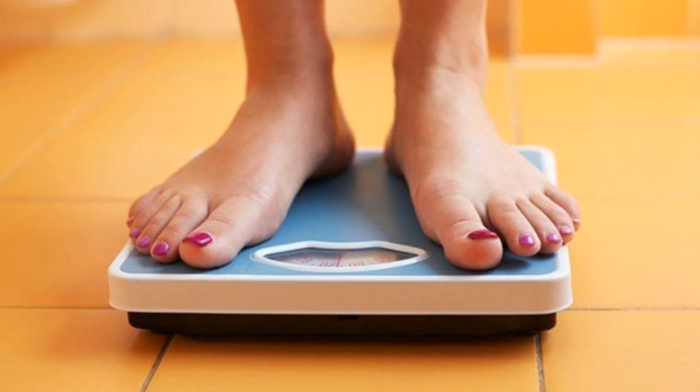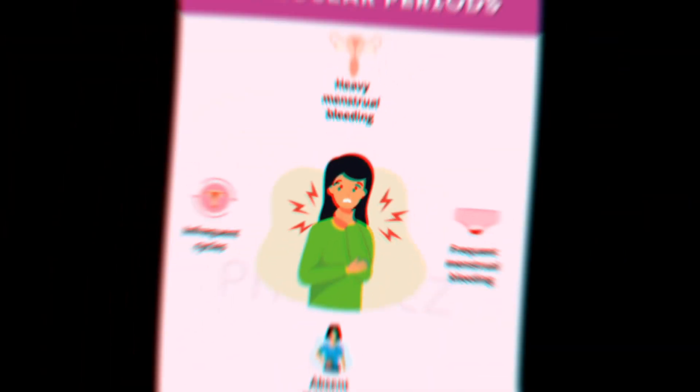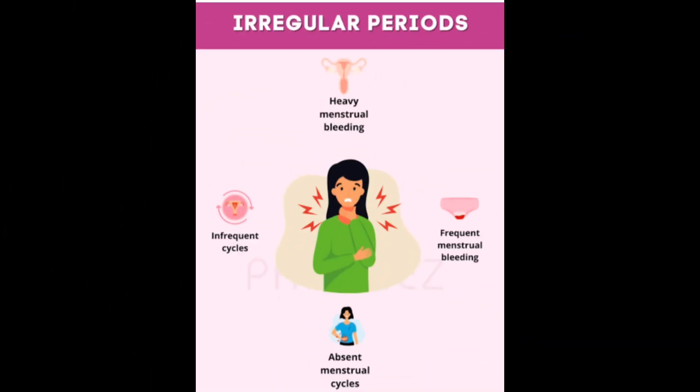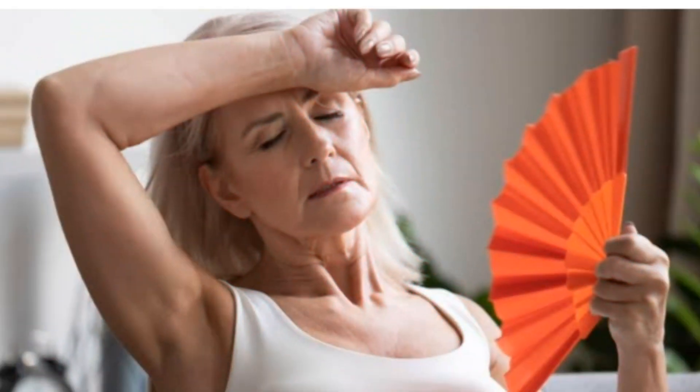Symptoms of overactive thyroid (hyperthyroidism) include anxiety, irritability, nervousness, trouble sleeping, weight loss, an enlarged thyroid gland or goiter, muscle weakness and tremors, irregular or absent menstrual periods, sensitivity to heat, and vision problems or eye irritation.